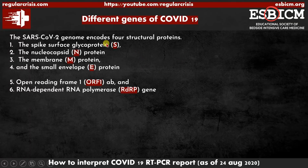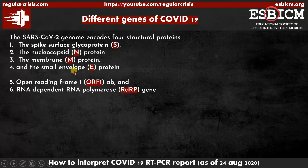Currently we know in detail about six genes, and they are being discovered on a daily basis. S stands for spike, N stands for nucleocapsid, M stands for membrane, and E stands for envelope. Two more are ORF1AB, which is very specific for COVID-19 virus, and recently they have discovered ORF8, which is very very specific for COVID-19 virus.